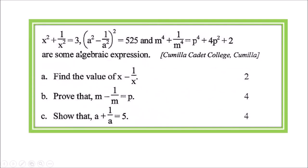Here is a question from Kubila Credit College — it is a very difficult question. I am reading the stem first. Given: x² + 1/x² = 3. Also, (a² - 1/a²)² = 525. And m⁴ + 1/m⁴ = p⁴ + 4p² + 2 are the algebraic expressions.